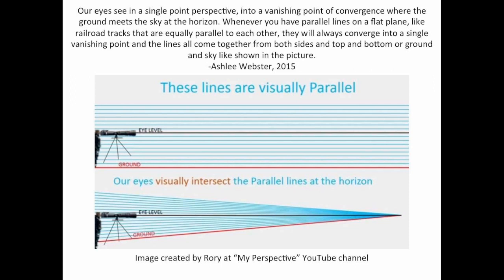I got this passage from a blog. The blogger is someone named Ashley Webster, and she writes, Our eyes see in a single-point perspective into a vanishing point of convergence where the ground meets the sky at the horizon. Whenever you have parallel lines on a flat plane, like railroad tracks that are equally parallel to each other, they will always converge into a single vanishing point, and the lines all come together from both sides and top and bottom or ground and sky.